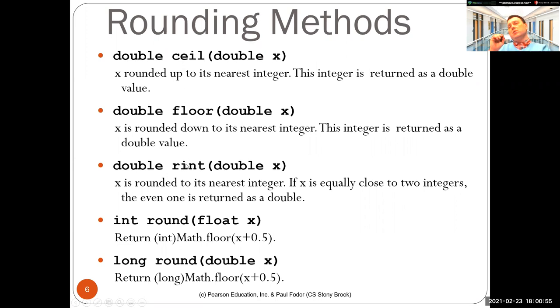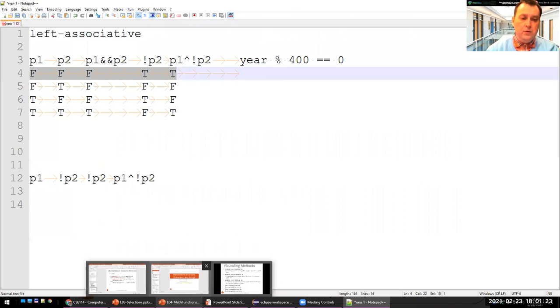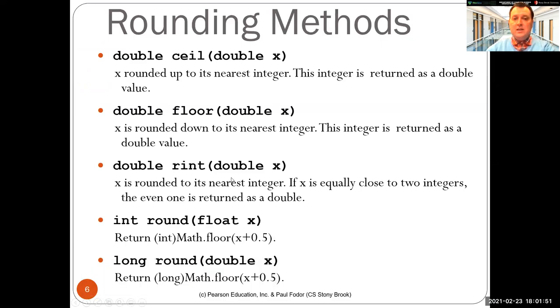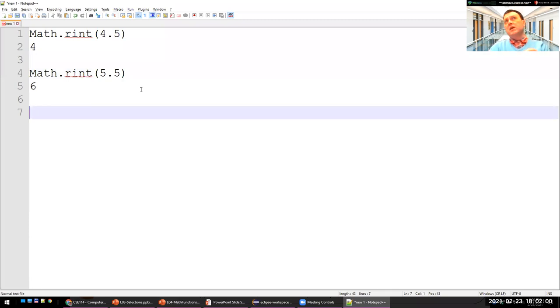Rint, in the case that, so it basically rounds to the closest nearest integer. So rint of, let's say 4.3, it will return 4.0. It's closer to 4 than to 5. The only difference is when it's equally close to two integers. So 4.5 will round to the closer integer that is an even one. Rint of 5.5, it's equally far from 5 and from 6. It will return 6. So the difference is that it always rounds to the nearest integer. If there are two integers that are equally close to x, it rounds to the even one.